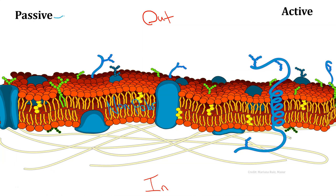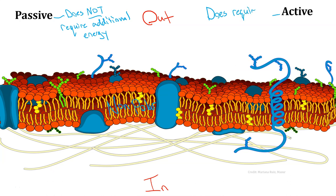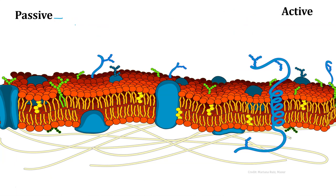The difference between passive and active transport is simple. Passive transport does not require additional energy put into the transport. Active transport is just the opposite—it does require additional energy. Oftentimes, though not always, that additional energy is in the form of breaking down ATP to fuel the movement of a substance.